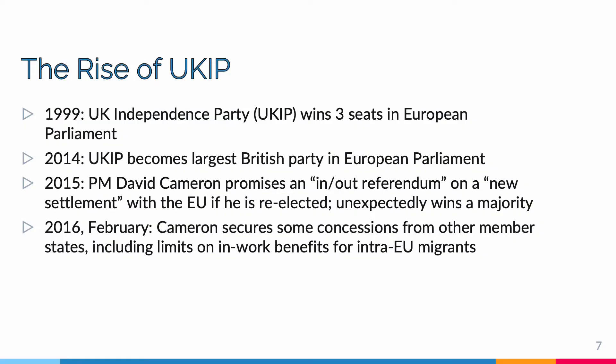The United Kingdom Independence Party (UKIP) is a Euroskeptic, right-wing populist political party and was at the forefront of the fight for leaving the EU. In 1999, they made strides by winning three seats in the European Parliament, and in 2014 they became the largest British party in the European Parliament. In 2015, you can see their influence when Prime Minister David Cameron promised an in-or-out referendum on a new settlement with the EU if re-elected, and unexpectedly won a majority. After that, we see the emergence of the Brexit process, which we will go through in the following slides.